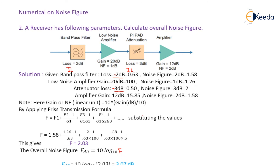F in dB = 10 log₁₀(2.03). Substituting 2.03, we get the answer 3.07 dB. That is the overall noise figure of the receiver section.